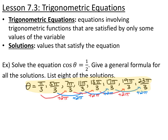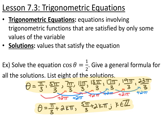To write the general formula, there are two base angles between zero and two pi, and then we just add some multiple of two pi each time. So theta equals pi over three plus two k pi, where k is some integer representing full rotations around the circle, and also theta equals five pi over three plus two k pi, where k is again an integer.